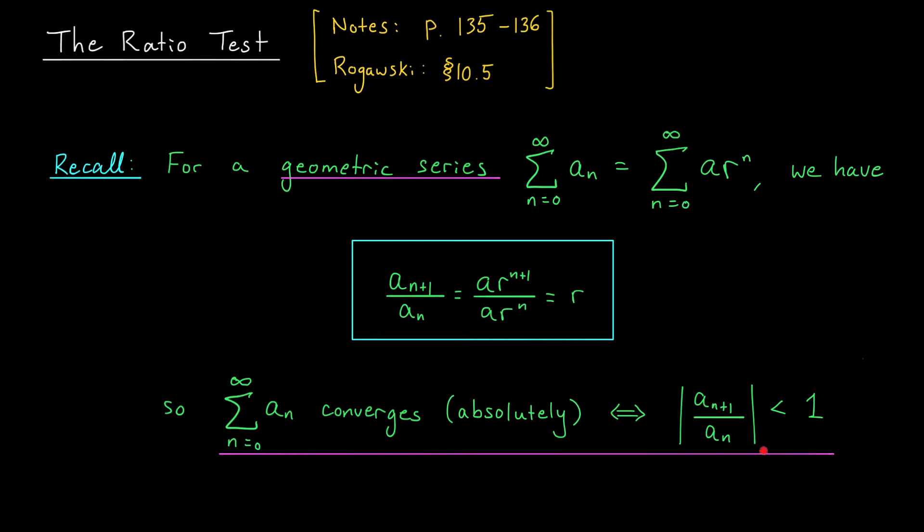Finally, if the ratio is tending to exactly 1, it's actually a little bit difficult to say. It will depend on how the limit is approaching one, and we actually won't be able to draw any conclusions. So let's summarize these ideas by stating the ratio test on the next slide, and then we'll jump into some examples.